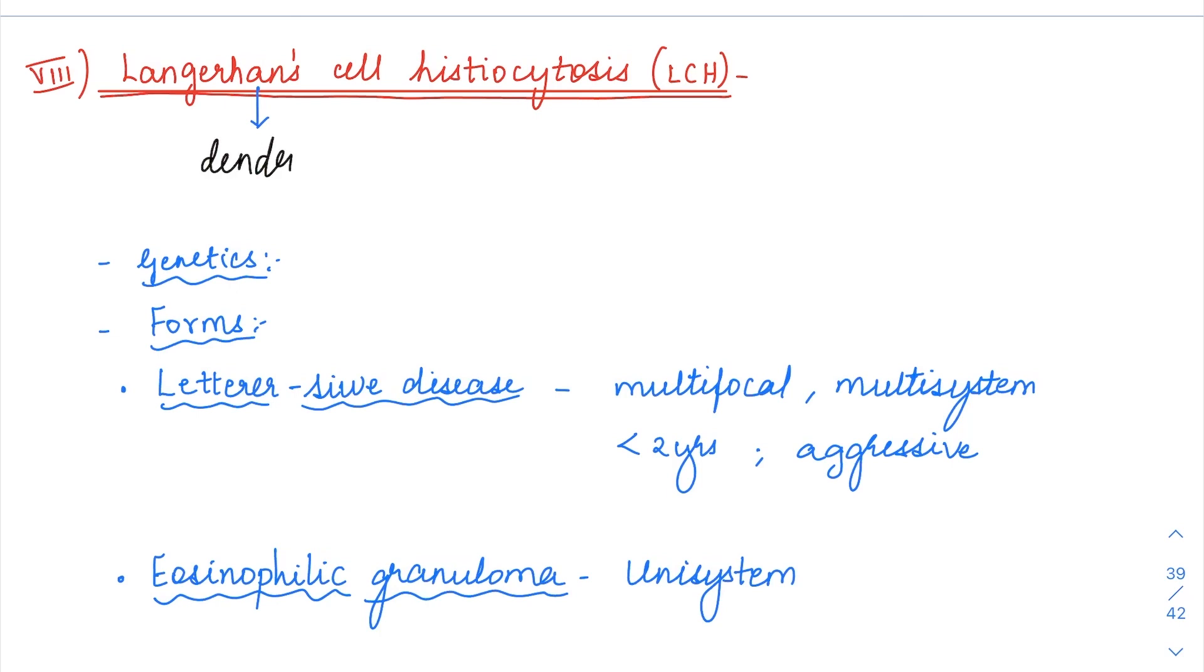Langerhans cell is the dendritic cell which is basically an APC, antigen presenting cell present on the skin. Here the genetics involved in LCH is again going to be BRAF mutation. We saw it in melanomas, nevi, hairy cell leukemias and then in LCH also and also in colon cancers. All of this is involving the BRAF mutation.